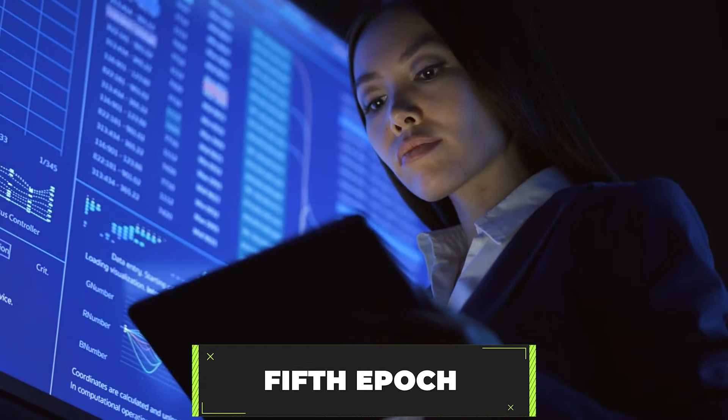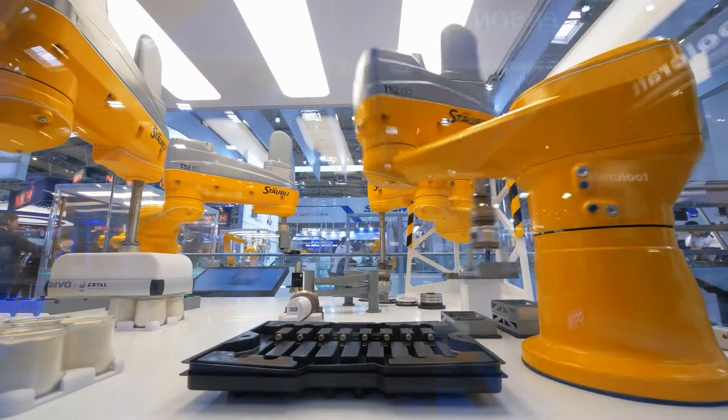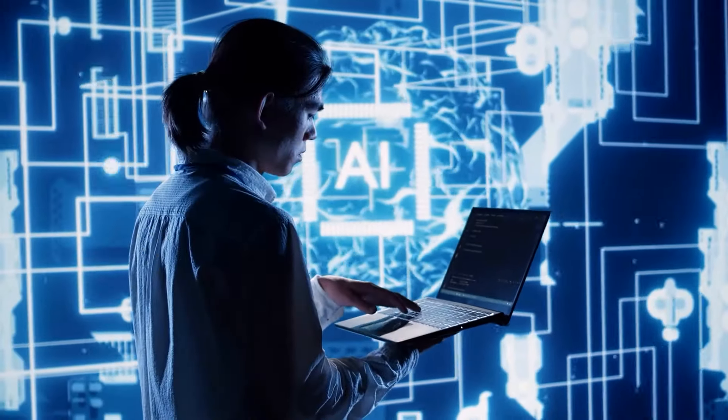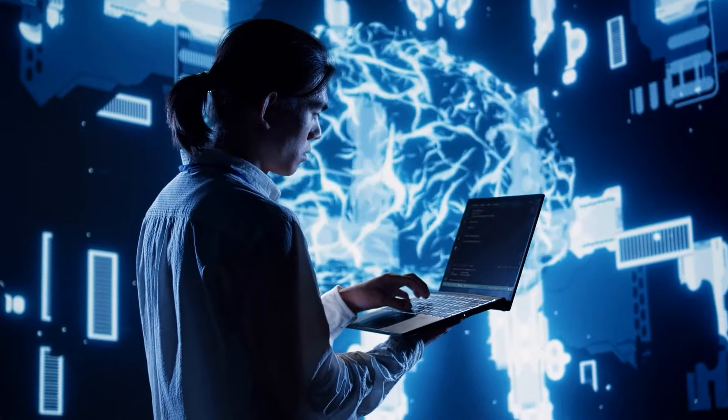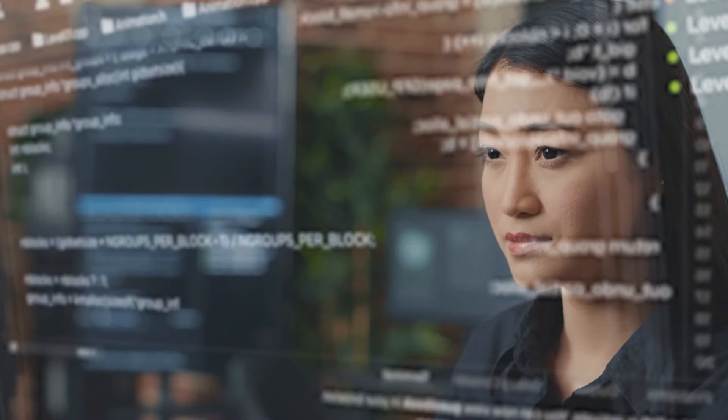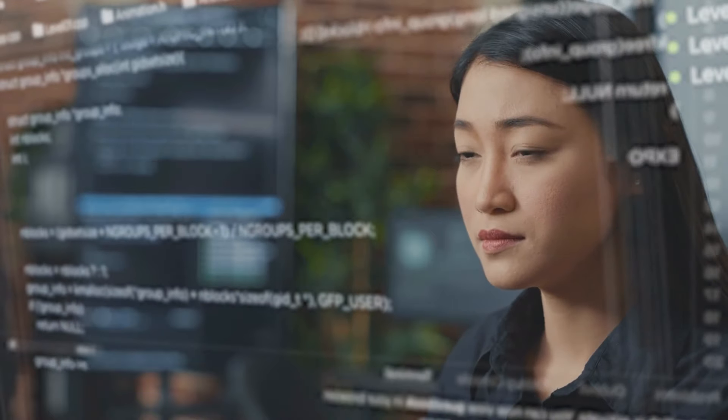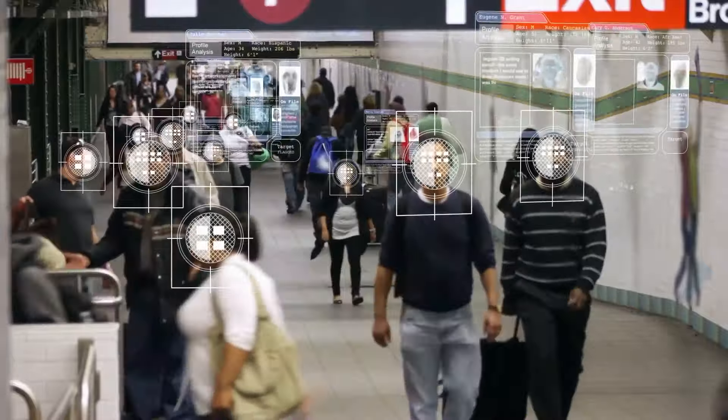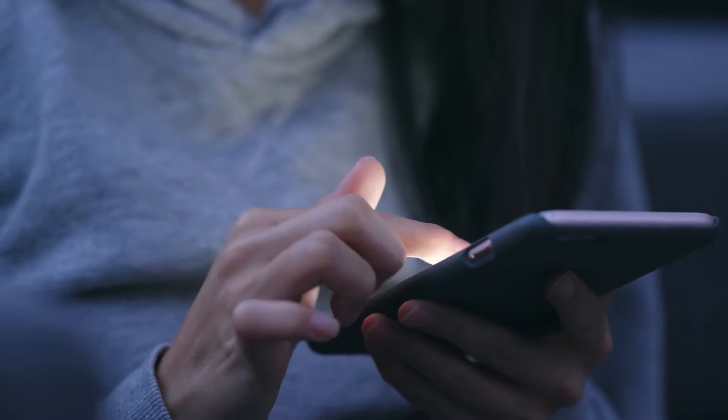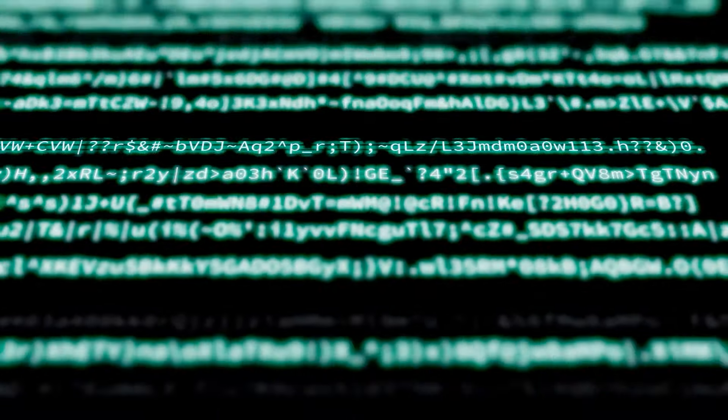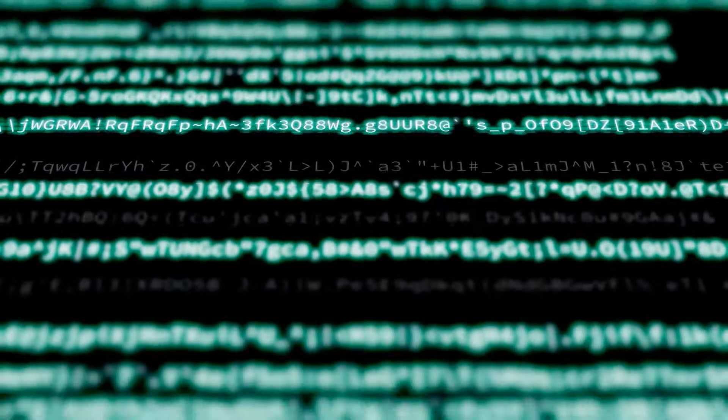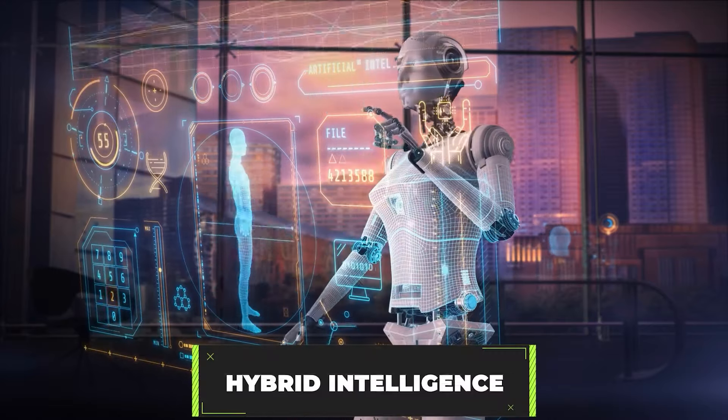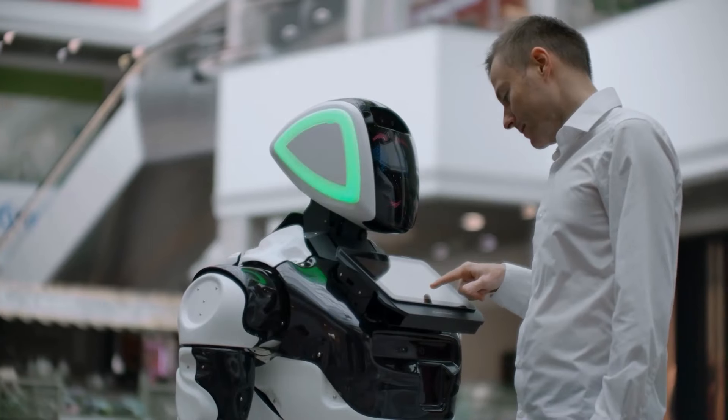The fifth epoch is the one we are currently experiencing, characterized by the merging of human intelligence with machine intelligence. Advances in artificial intelligence, machine learning, and neural networks are enabling machines to perform tasks that once required human cognition. This epoch is marked by the increasing integration of technology into our daily lives, from smartphones and wearable devices to sophisticated AI systems that assist in decision-making and problem-solving.